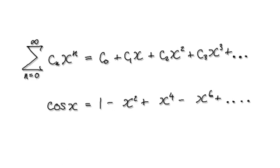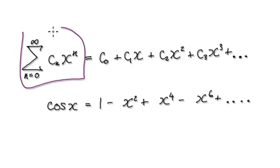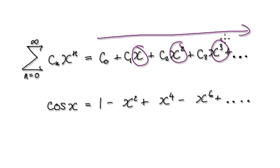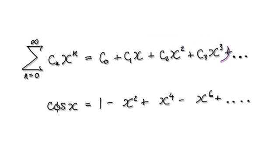Now we're going to move on to a new topic. This is a typical form of a power series. You've got your constant, then your x, x squared, x to the power 3, and so on, all the way to infinity.